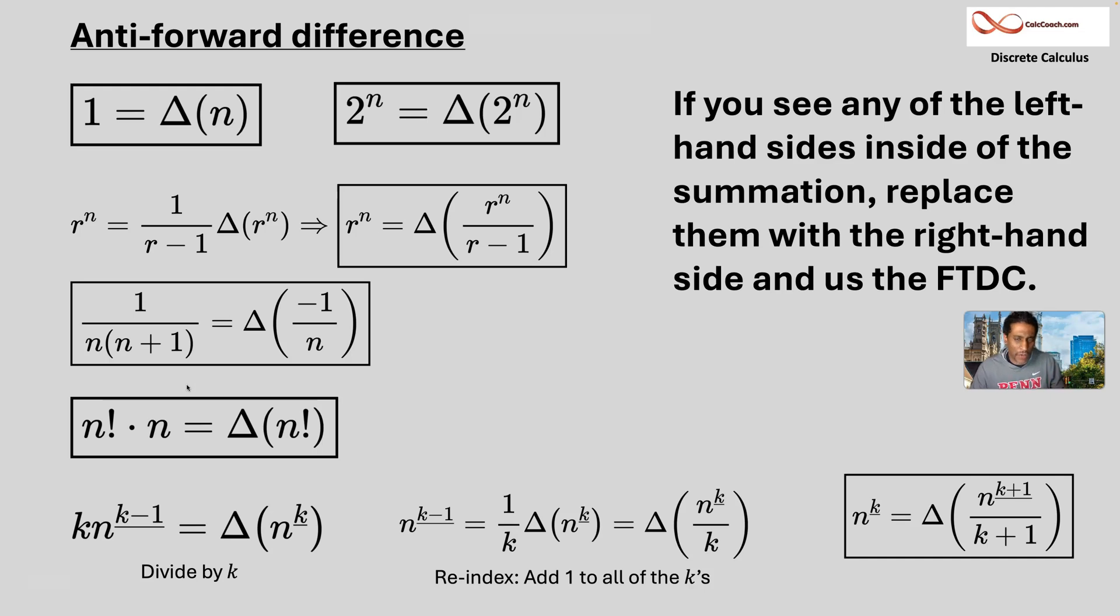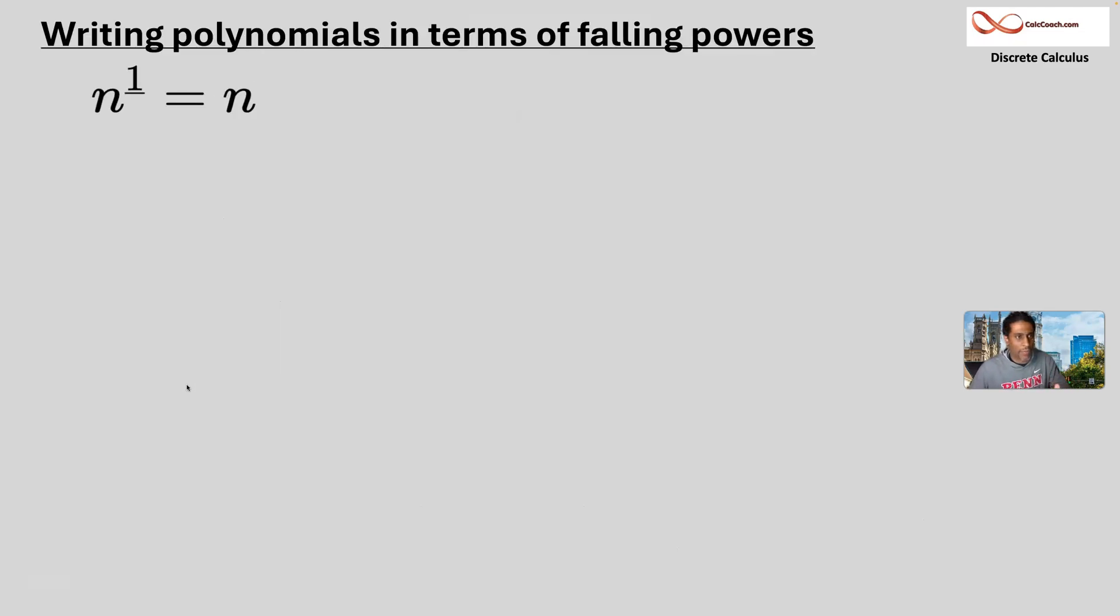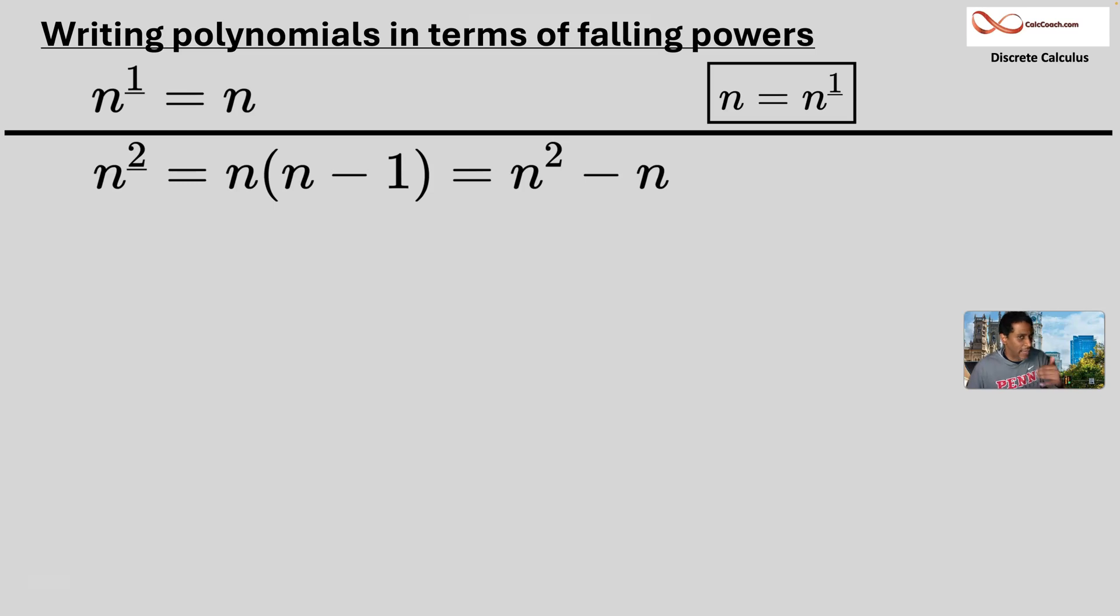Okay? When it comes to polynomials, we want to first write them in terms of falling powers. All right? For n, we already know. N written as a falling power is just n to falling power one. Let's work for n falling two. We know that's n times n minus one, which multiplies out to be n squared minus n.